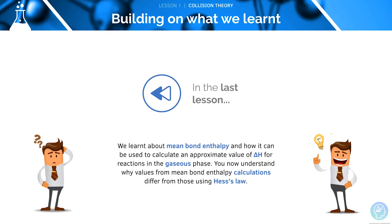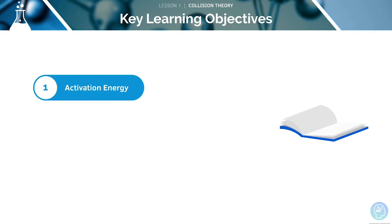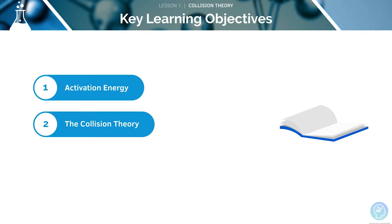In the last lesson, we learnt about mean bond enthalpy and how we can calculate approximate values of delta H using it. In this lesson, we've got two key learning objectives: the first is to cover activation energy, and the second is to look at collision theory.